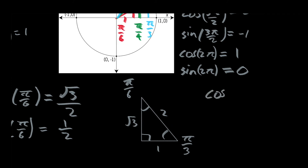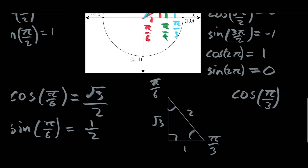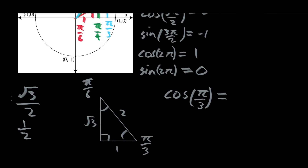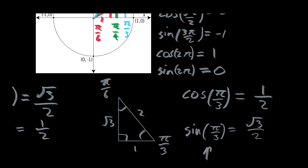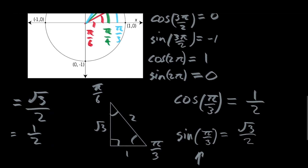For the cosine of pi over three, using the same special triangle, the adjacent side to pi over three is one and the hypotenuse is two, so cosine of pi over three is one half. The sine of pi over three is just opposite over hypotenuse, which is root three over two. Notice that the cosine of pi over six equals the sine of pi over three, and the sine of pi over six equals the cosine of pi over three.